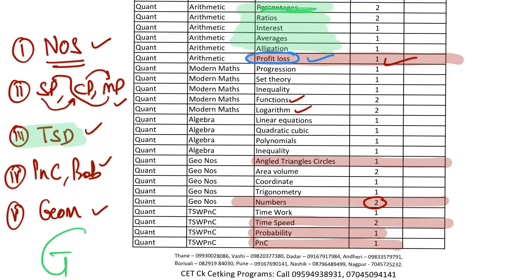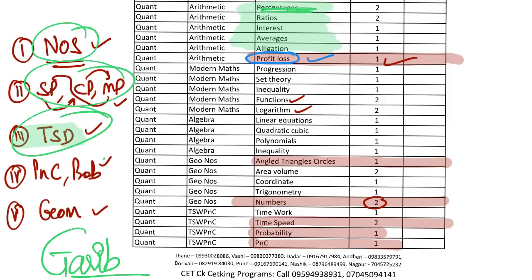This is what I call the G-strategy — G meaning 'garib student.' If you feel you have no resources, don't leave it entirely — just do a few topics. These are the five main topics. If you want to add or change any topic, please comment. Within quant, there are a few topics which are stronger or weaker — we have to identify those topics and work on them.